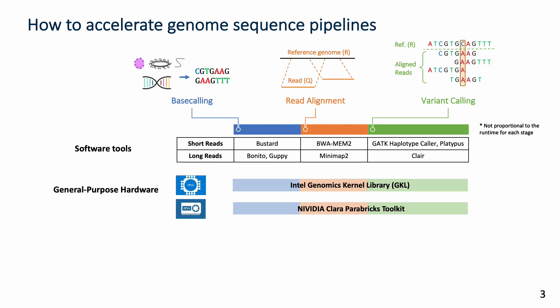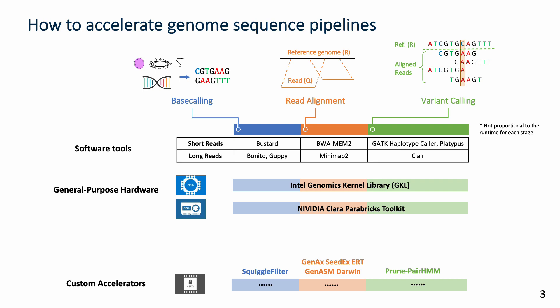General-purpose hardware vendors have libraries to accelerate the entire pipeline. Meanwhile, custom accelerators provide much higher performance. However, their design cost is also higher, and they only support one stage in the pipeline.